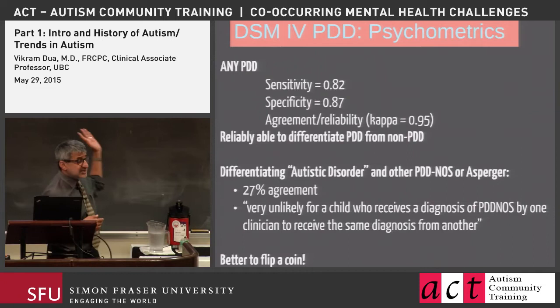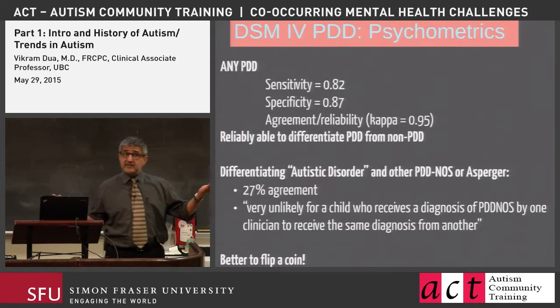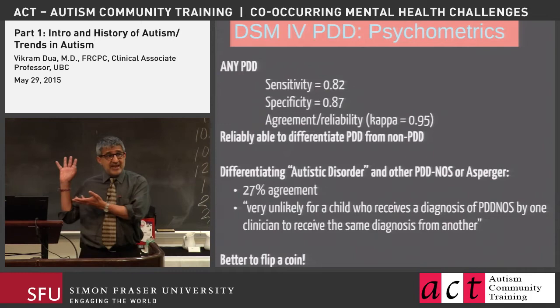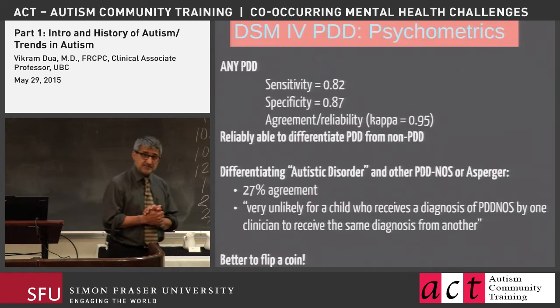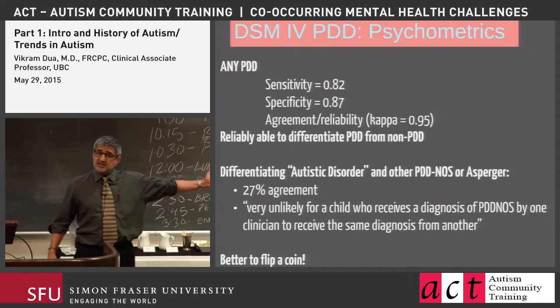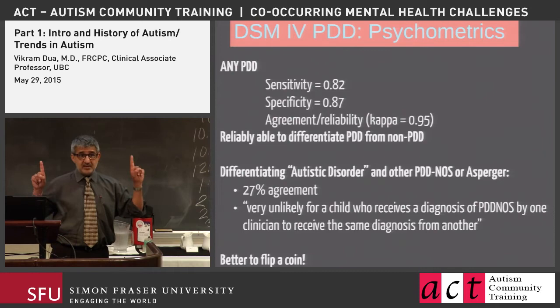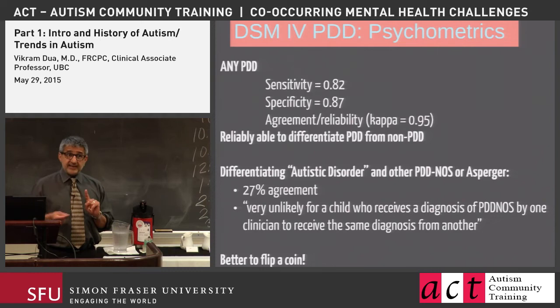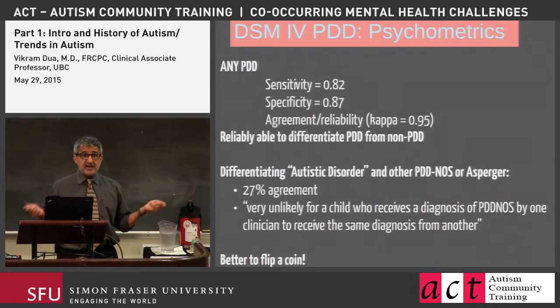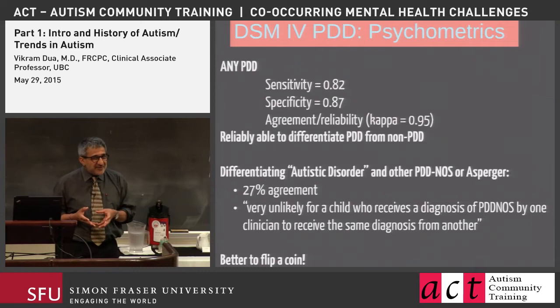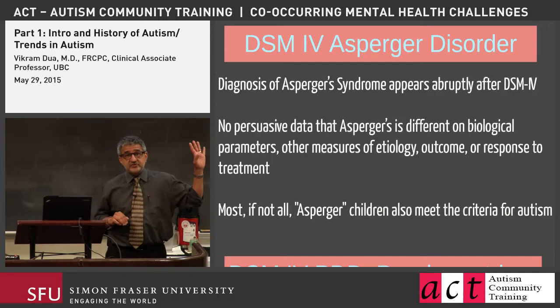In one study, they looked at the reliability of diagnosing autism versus PDD-NOS. A child would be assessed by Expert A, who concluded the child had autistic disorder. The same child went next door and Expert B concluded the child had PDD-NOS. The likelihood of these two experts agreeing was less than chance — which implies you might as well flip a coin. If experts can't determine what's what, how important is the distinction?